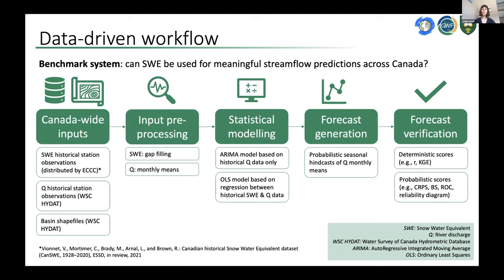The statistical modeling runs two different models: an ARIMA model based only on historical streamflow observations — asking what the future streamflow will look like based on past observations — and an ordinary least squares regression model using historical snow water equivalent data to forecast future streamflow. From these hindcasts we analyze how well we performed.